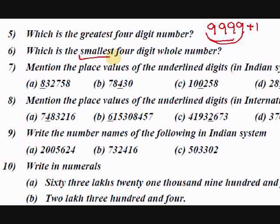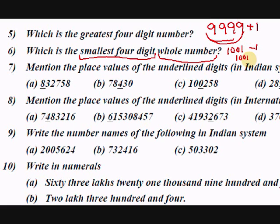Which is the smallest four-digit whole number? The smallest four-digit number is when you subtract 1, it becomes a three-digit number. If you take 1,000 and subtract 1, it becomes 999, which is a three-digit number. So the smallest four-digit number is 1,000.